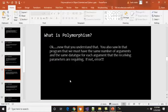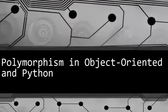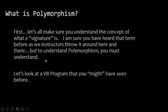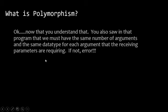Let's get back to the slides. Now that you understand the idea of a signature, you also saw that a program must have the same number of arguments and the same data type for each argument that the receiving parameters require. If not, you'll get an error — it basically won't even compile. You must have those things lined up, which you should recognize by now from Programming 1 and this class.